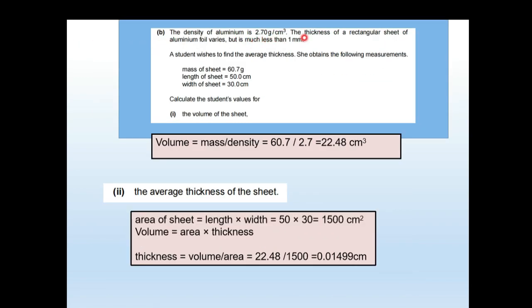The density of aluminium is given and the thickness of a rectangular sheet of aluminium foil is much less than 1 mm. The student measures the mass, length, and width of the sheet. Volume equals mass divided by density: 60.7 ÷ 2.7 = 22.48 cm³. Area equals length × width. Thickness equals volume divided by area, giving 0.01499 centimeters.